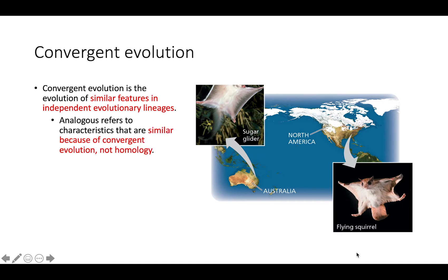Analogous refers to characteristics that are similar because of convergent evolution, not homology. Homologous structures are similar because of shared ancestry, whereas analogous structures are similar because of convergent evolution and not shared ancestry.